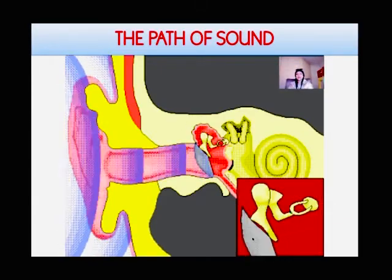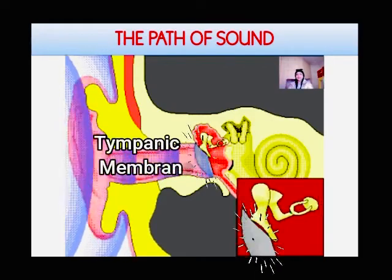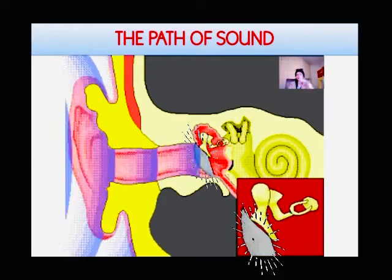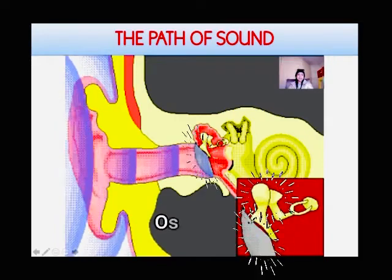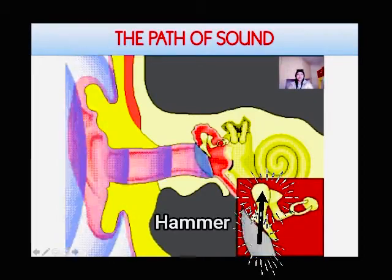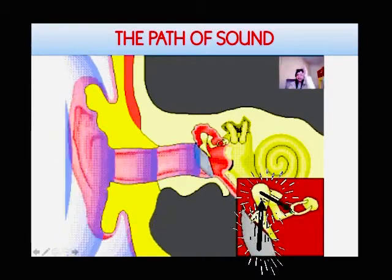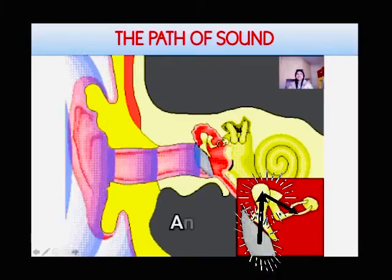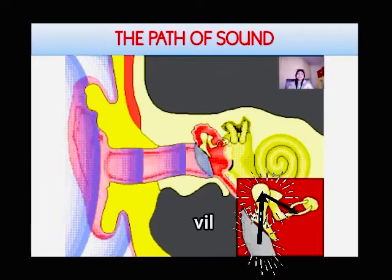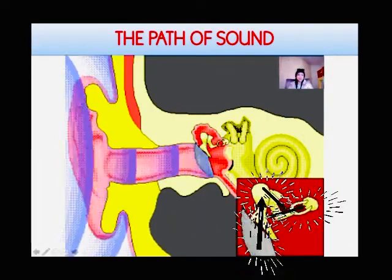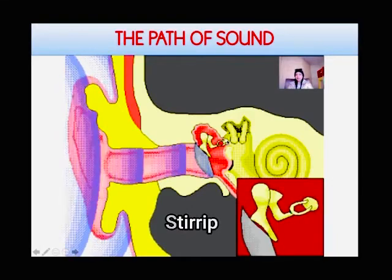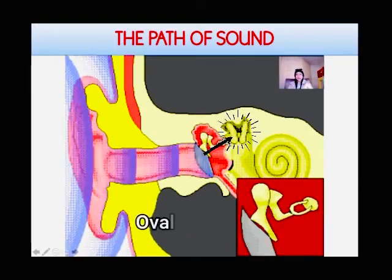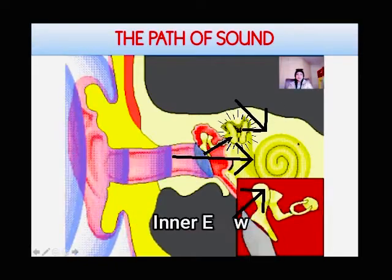The eardrum is also known as the tympanic membrane. The eardrum vibrates according to the frequency of the sound waves. The vibrations are then transmitted into the ossicles, which are inside the middle ear. The ossicles are the hammer — the vibrations are first transmitted to the hammer, which starts to vibrate, transmitting the vibration onto the anvil, then the stirrup. The stirrup starts to vibrate and will then pass the vibrations through the oval window and into the inner ear.